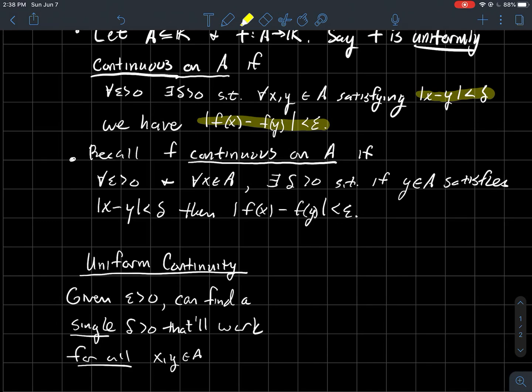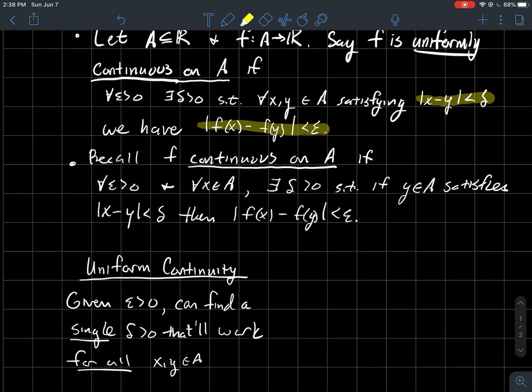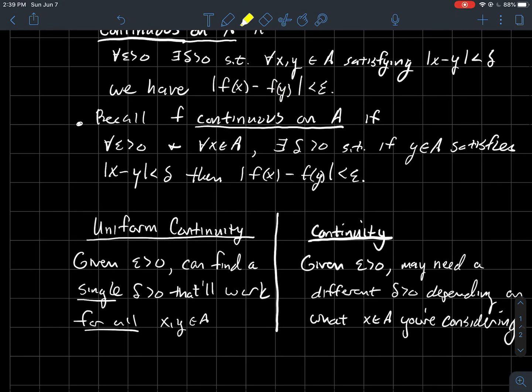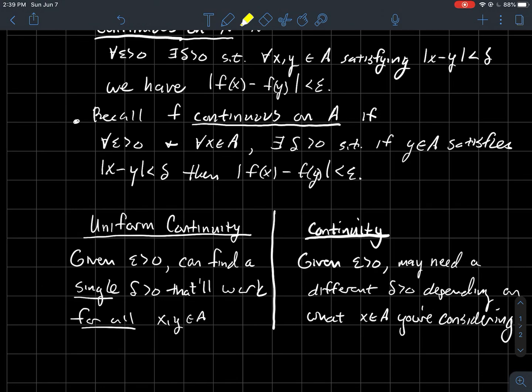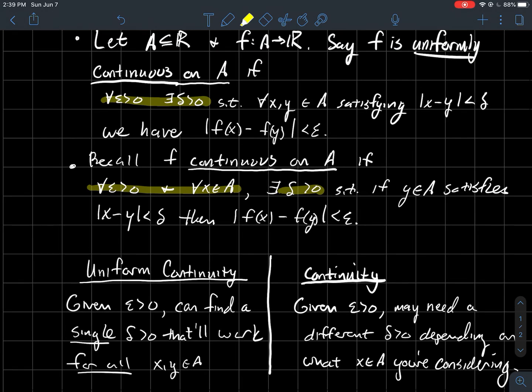So again, delta only depends on epsilon for uniformly continuous. Whereas for continuous, or just for continuity, I'm saying given an epsilon, you might need a different delta depending on what x you're actually considering. So in other words, again, the order here, for each epsilon and for each x in A, this delta might depend on both of those things. Whereas again, up here, delta only depends on epsilon for uniform continuity.